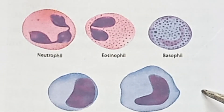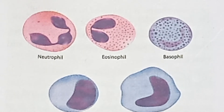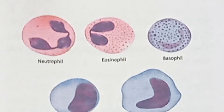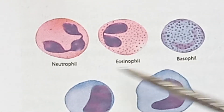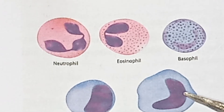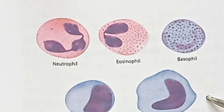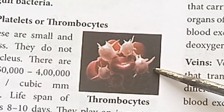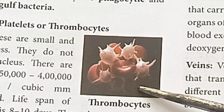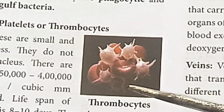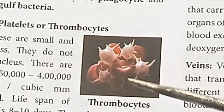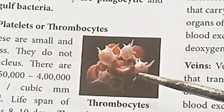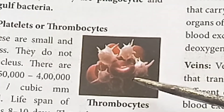White Blood Cells (WBC) have an amoeboid shape and their main function is to defend the body. Blood platelets, also called thrombocytes, play an important role in the clotting of blood.